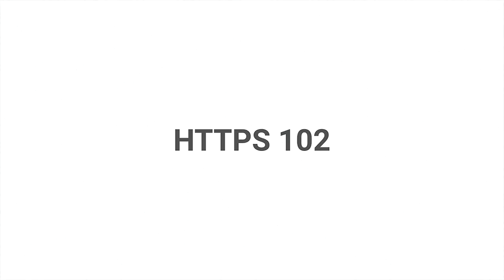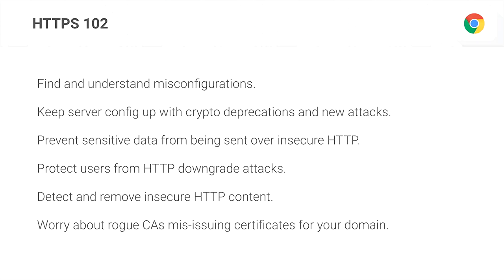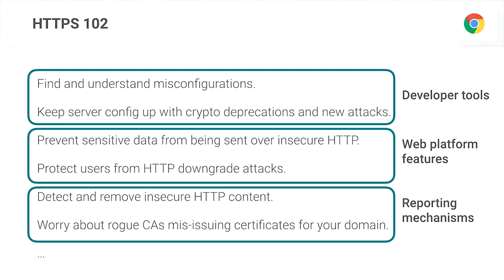What I'm going to be talking about today is the next step, because it turns out there are a number of things you actually have to think about after you get that out-of-the-box HTTPS deployment. It's easy to look at this list and just feel totally depressed — why should I do this? I have no hope of actually getting a solid HTTPS configuration that's going to give my users the privacy and security benefits they need. That's what we're working on in Chrome — projects from developer tools, web platform features, and reporting mechanisms to help you discover problems. All of these are designed to make it easy to migrate to HTTPS.